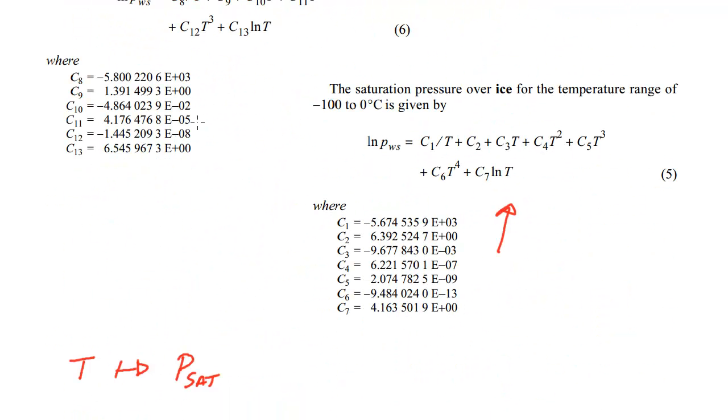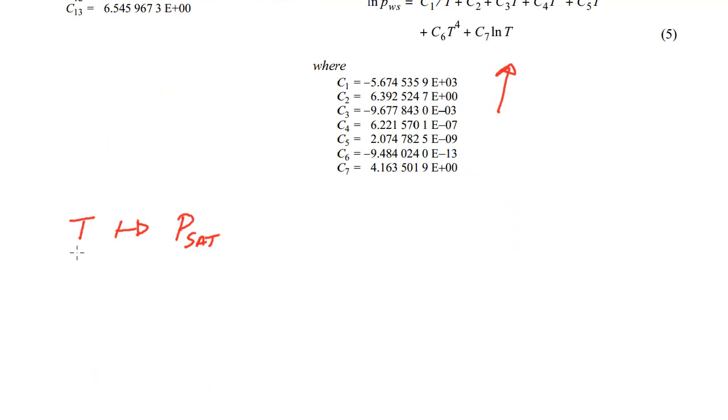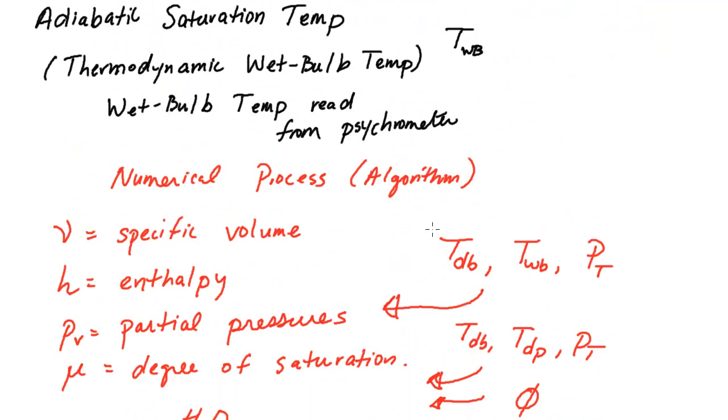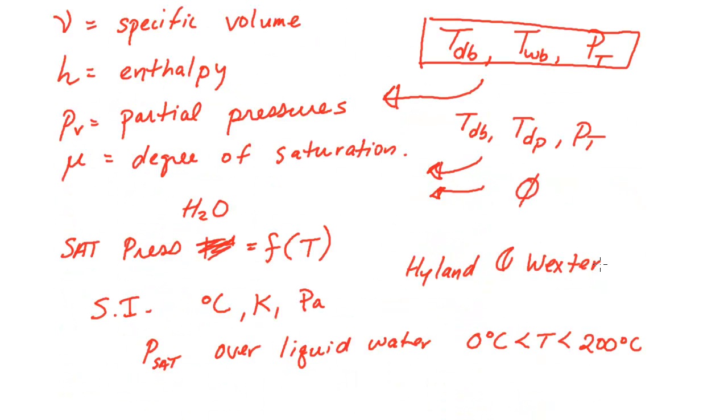Where we left off is the numerical relationships for calculating the saturation pressure given a temperature. We had these relations which are related to SI units, but essentially we can calculate the saturation pressure given any temperature. We're now going to start on our journey with this case, when we know the dry bulb temperature, wet bulb temperature, and total pressure.